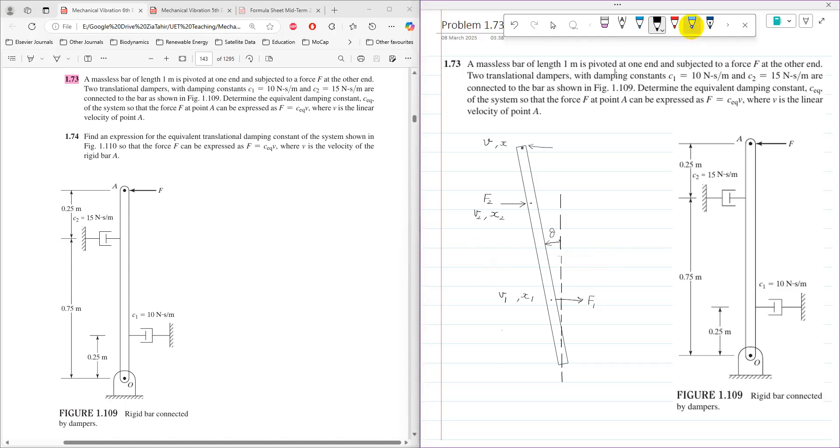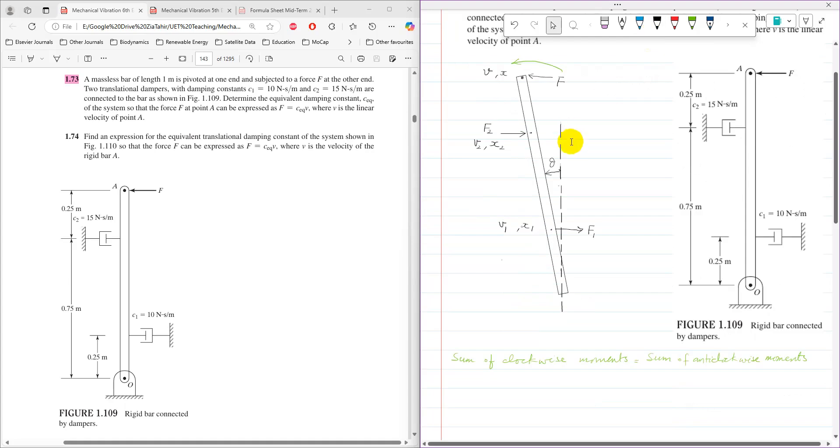Each force will produce a moment. For a small angle theta, we can develop a condition of equilibrium to get a relationship between forces F, F1, and F2. For a small angle theta, the sum of clockwise moments equals the sum of anti-clockwise moments.